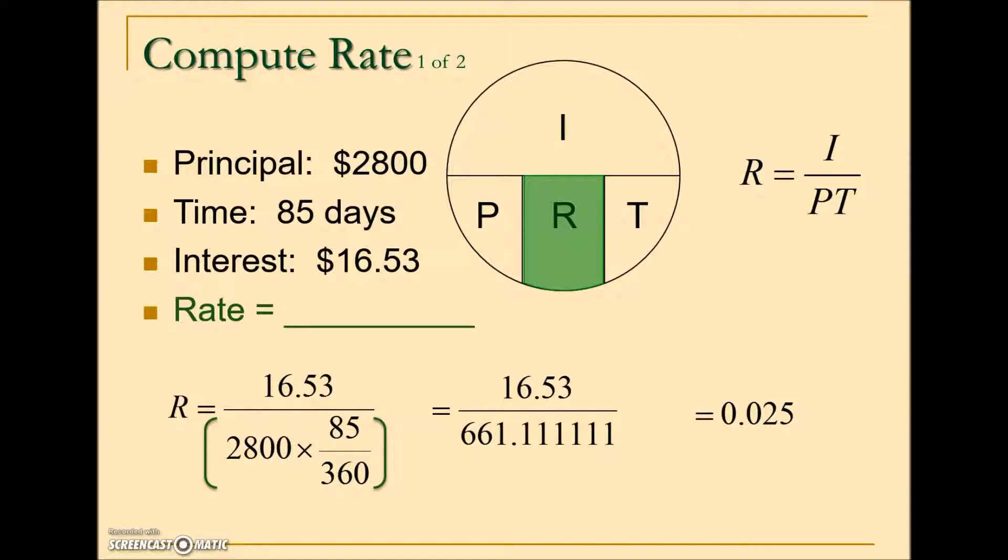The rate calculation looks a lot like the principal with one exception: we're not done. Your rate needs to be expressed as a percent, so we need to move our decimal place two places to the right, and then we may be asked to round our answer to the nearest tenth of a percent. We don't do the rounding for our final answer until we have converted this decimal to a percent. So when we simplify 0.025, we end up with a 2.5% rate for this example.